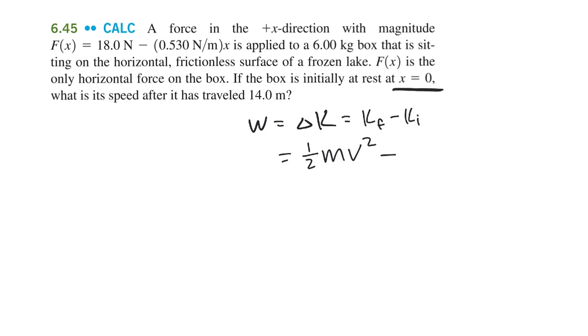It's one-half mv squared minus the kinetic energy initial because this is kinetic final minus kinetic initial. And the initial kinetic energy has to be zero because it's at rest. So you put that over there.